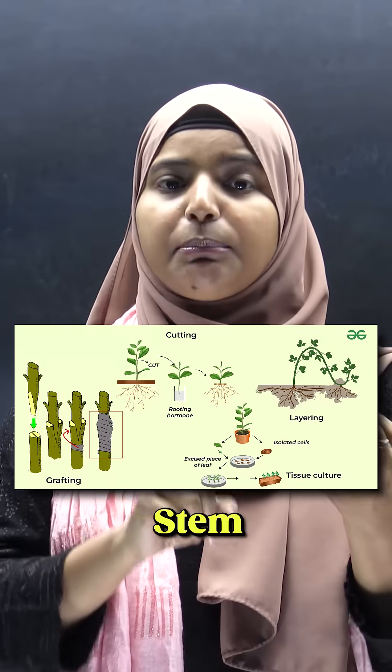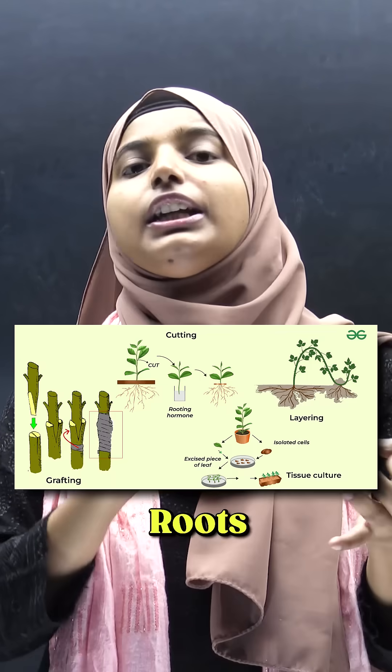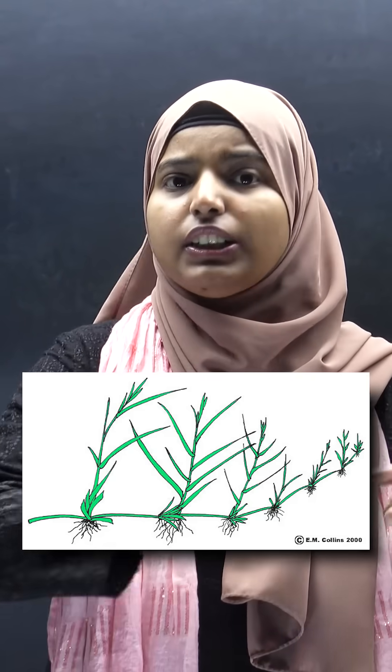If you are doing it naturally, use the stems, roots, and leaves to grow. For example, grass grows in a piece of land and grows slowly.